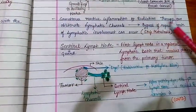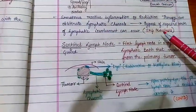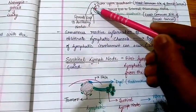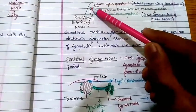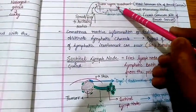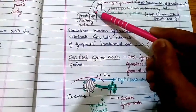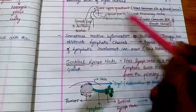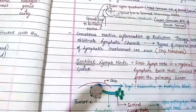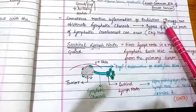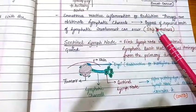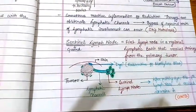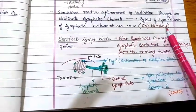Sometimes reactive inflammation or radiation therapy can obliterate lymphatic channels. When this occurs, drainage may bypass the expected route of lymphatic involvement and drain into internal mammary nodes instead. This is known as skip metastasis — bypassing the expected root of lymphatic involvement.